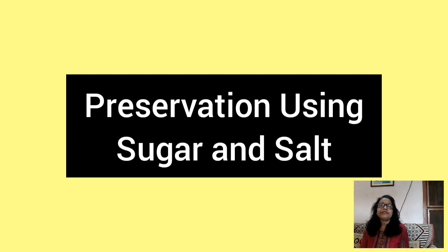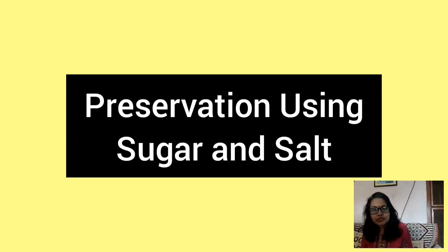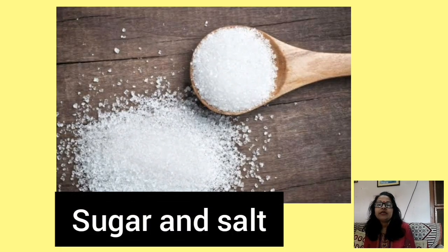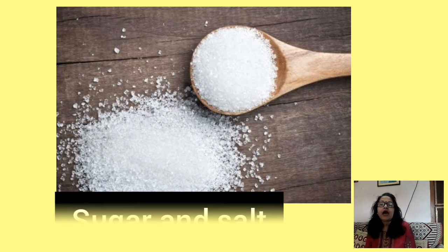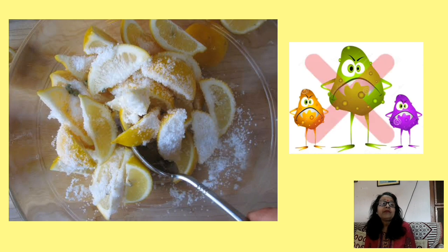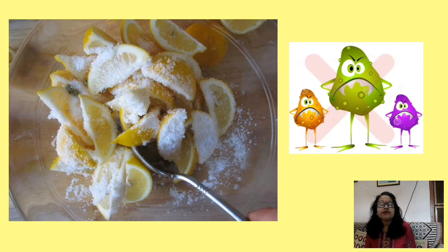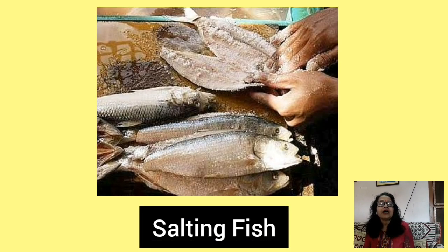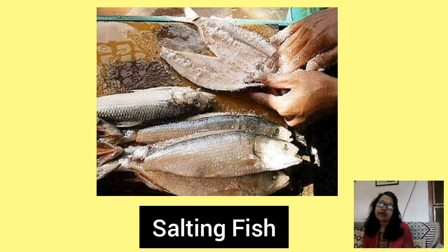Preservation using sugar and salt: Sugar and salt reduce the water content and make it unavailable for the growth of microorganisms. As a result, the food is preserved. Meat and fish are covered with salt to preserve them for a long time.